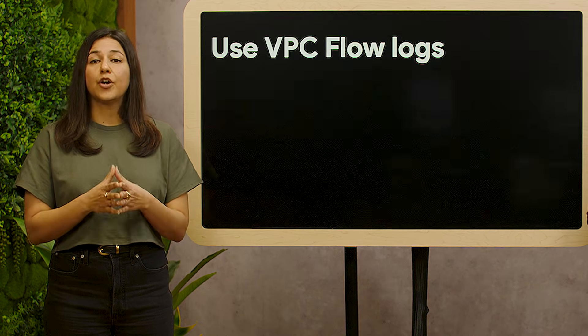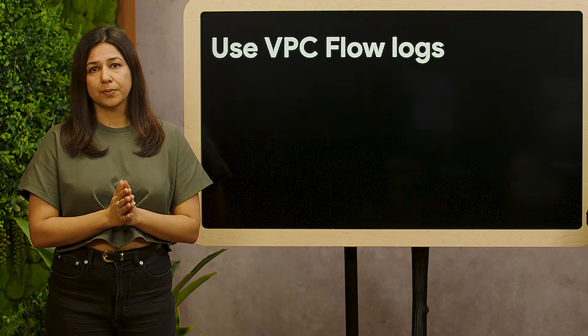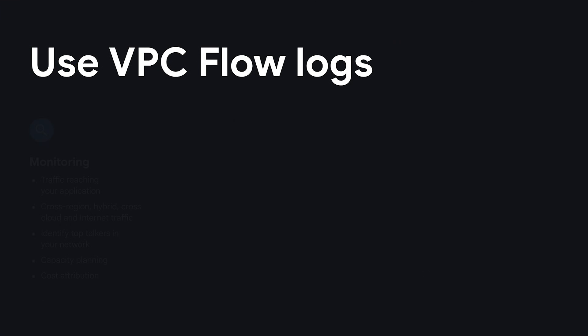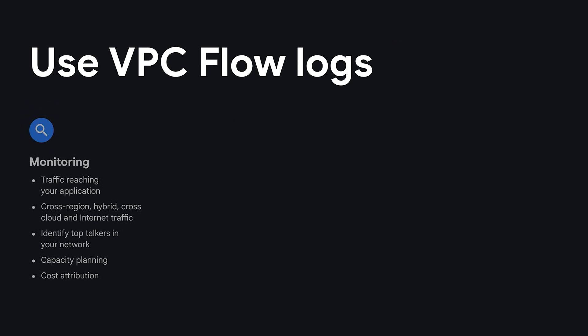You can use VPC flow logs for monitoring: to gain real-time visibility into traffic reaching your applications, to monitor cross-region traffic, traffic to on-prem, traffic to other clouds and internet traffic, to identify top talkers within your network, to understand usage patterns, and for capacity planning by analyzing traffic volumes and trends — as well as to facilitate cost attribution by tracking network traffic associated with specific resources.